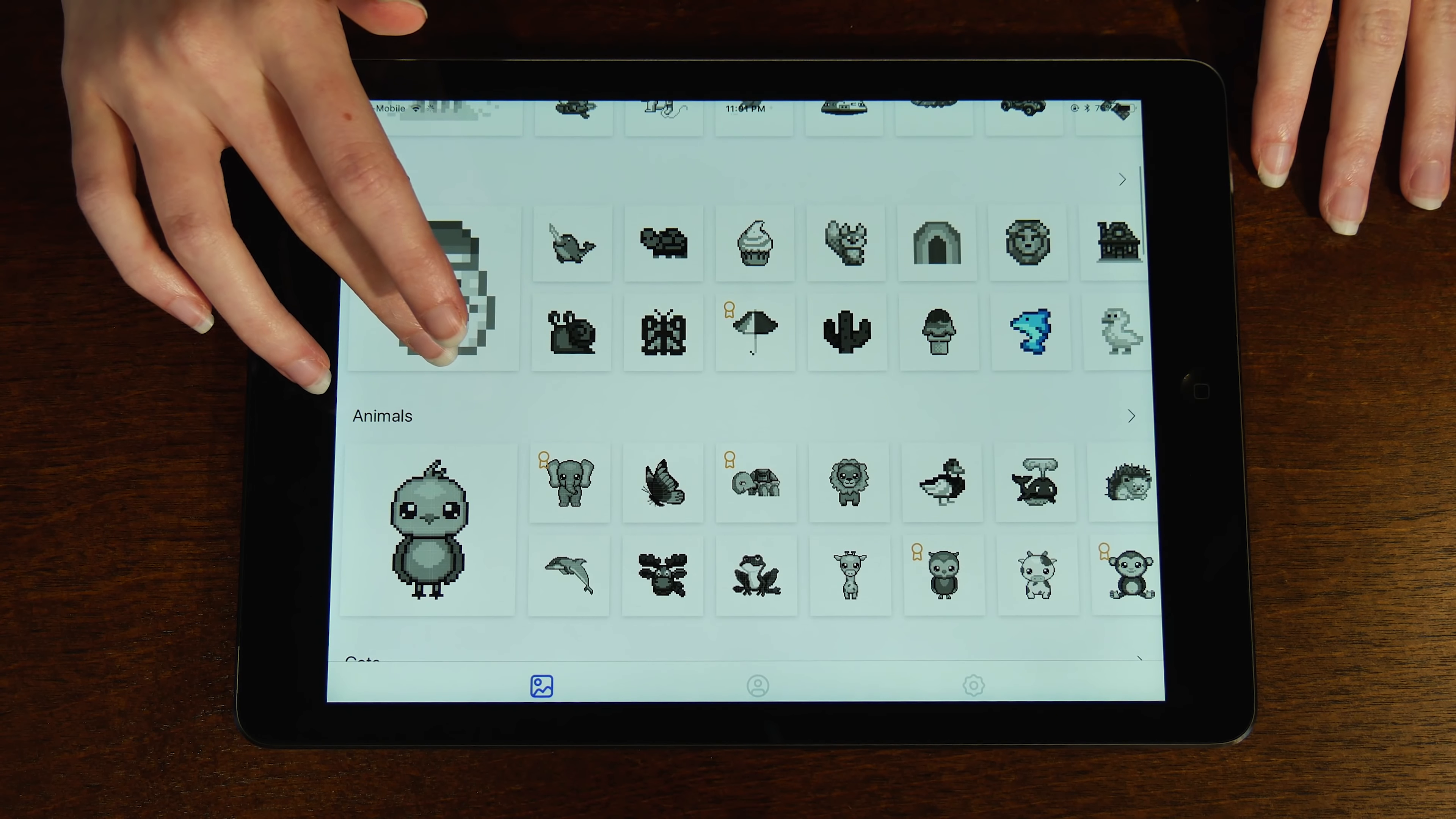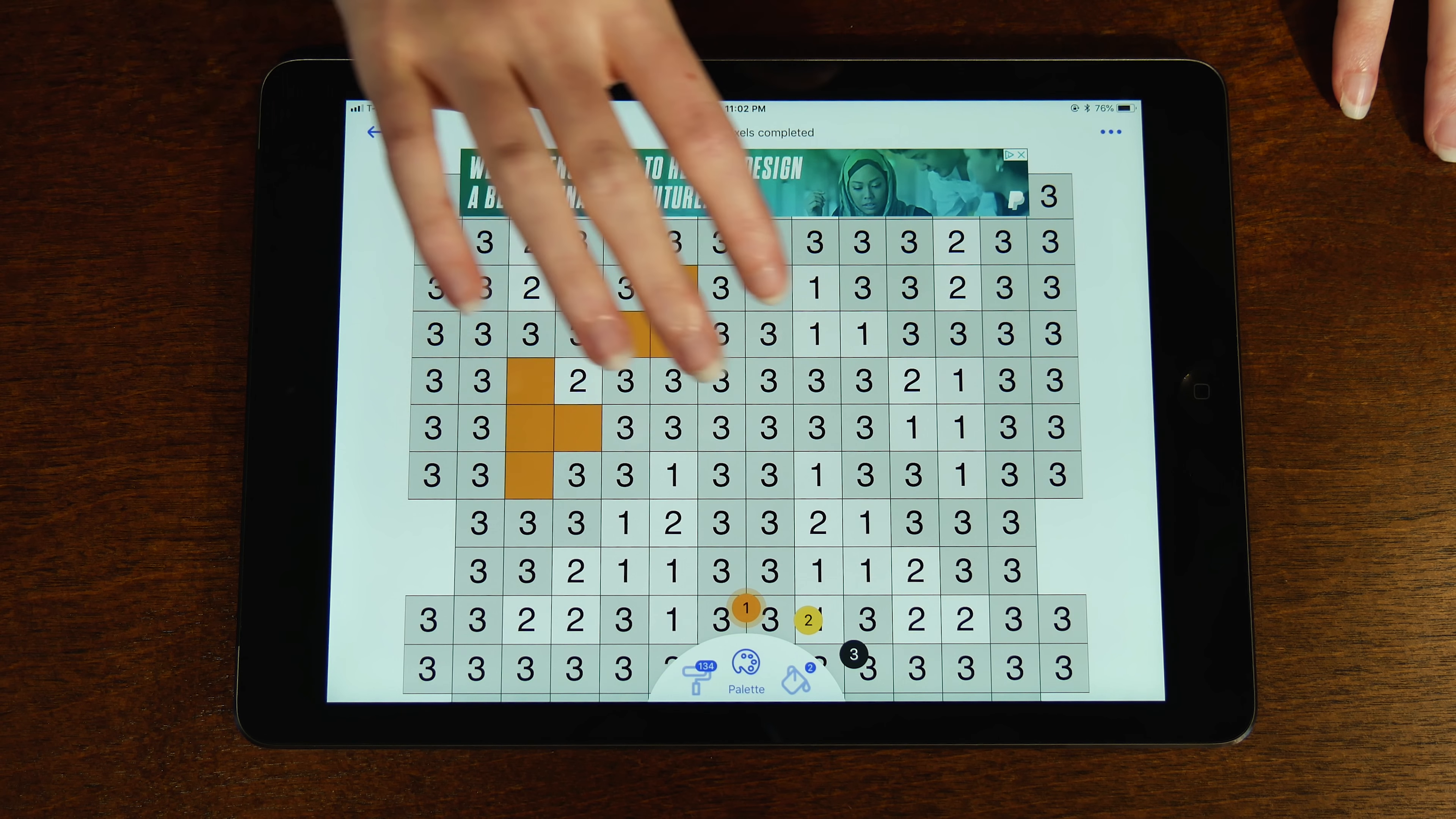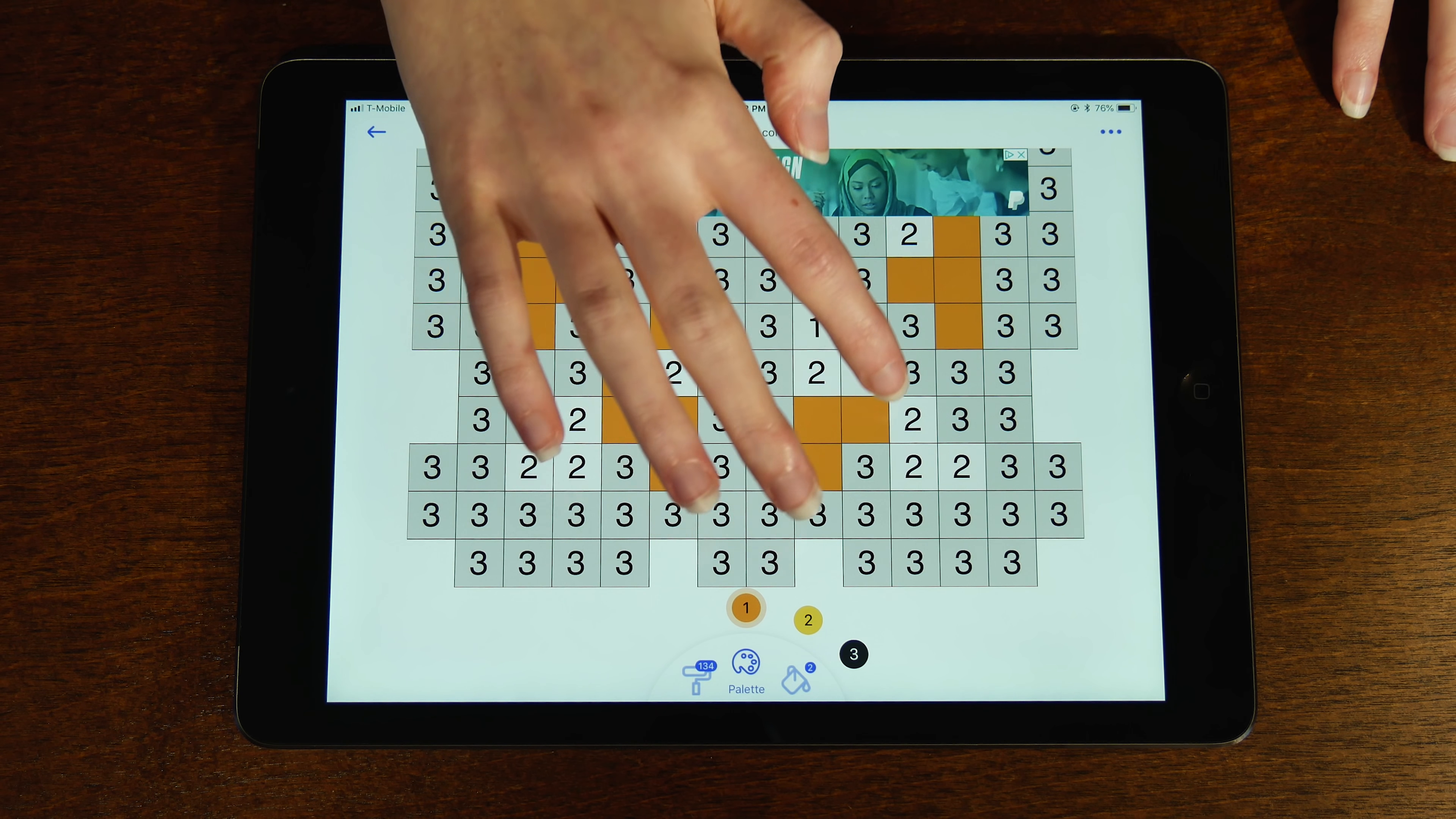Here we have our design that we'll be coloring in. It has three different color schemes that we'll be coloring in the picture with. Let's start off with number one. It does have a roller option, so you can gloss over all of the numbers from that particular category. But I prefer coloring them in individually.